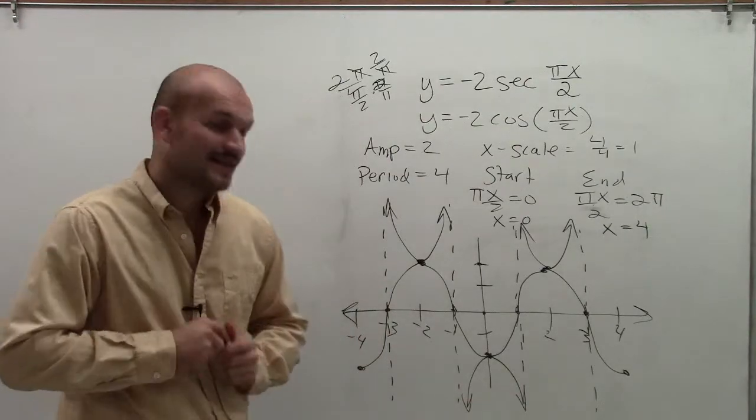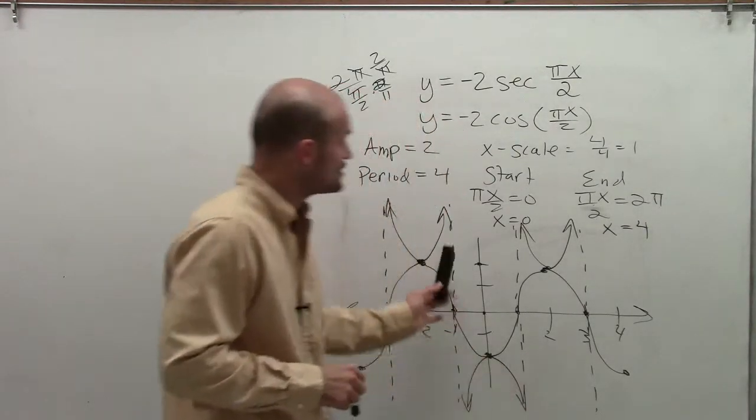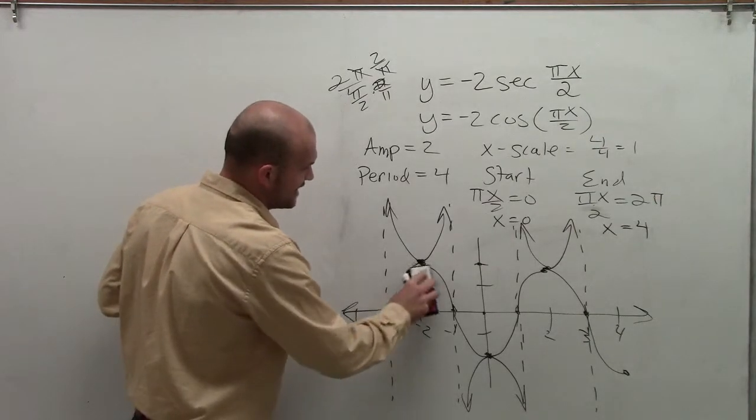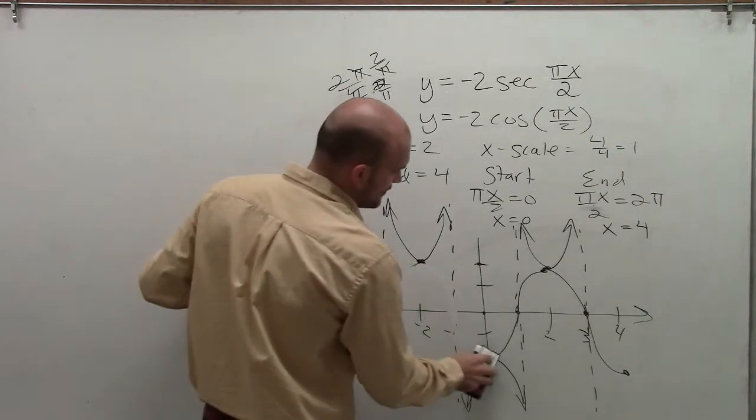So then, to finalize this graph, what I'm going to do is now just erase my actual cosine graph, as I'm just really using that as an aid to help me graph the secant graph.